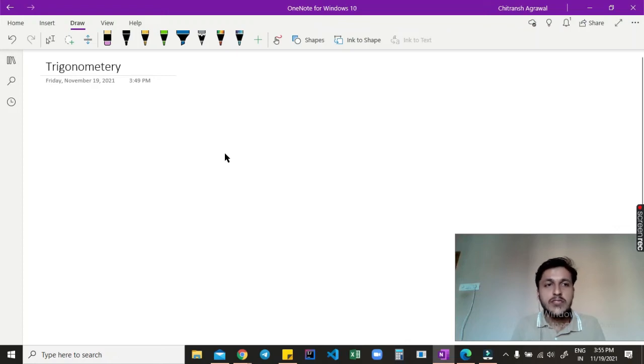Hello, in this video I am going to show you what is trigonometry. This word trigonometry is made from two words: trigon and metri. Trigon means a triangle and metri means measurement.